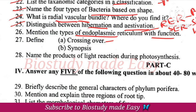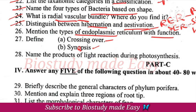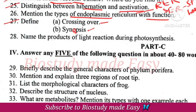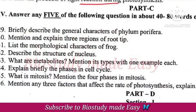Define crossing over. Synapsis is the pairing of homologous chromosomes. Prophase 1 stages are important here. Products of light reaction during photosynthesis.